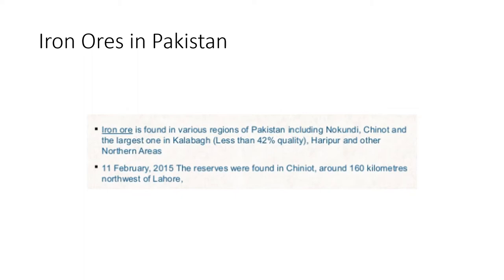Iron ores in Pakistan. Iron ore is found in various regions of Pakistan including Nokondi, Chenot, and the largest one is in Kalabau where less than 42% quality can be found. Iron ores can also be found in Haripur and other northern areas of Pakistan. On 11 February 2015, reservoirs were found in Chenot, around 160 km northwest of Lahore.